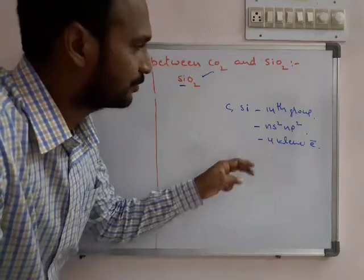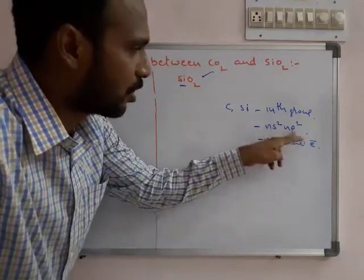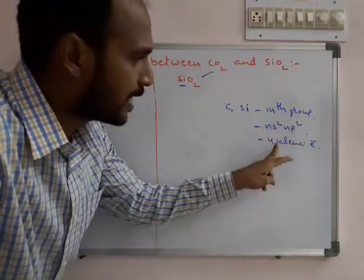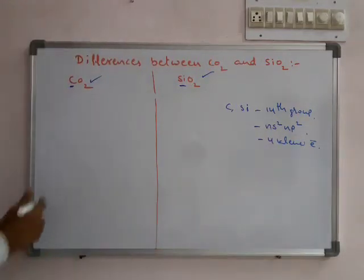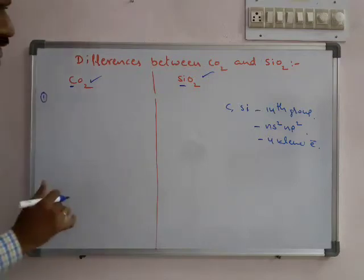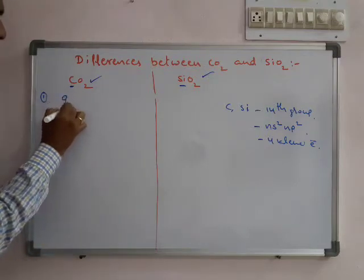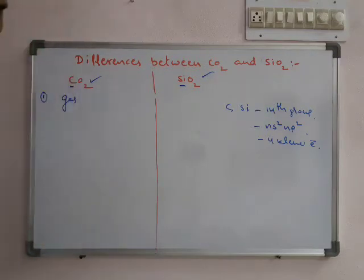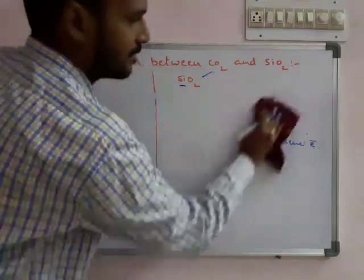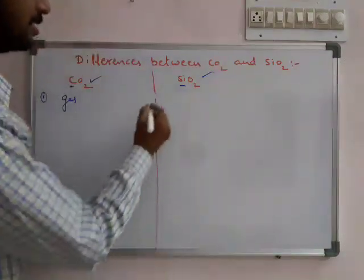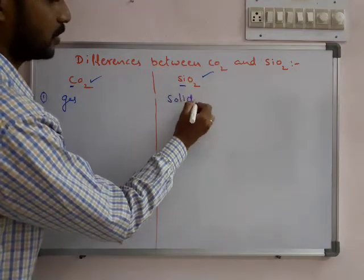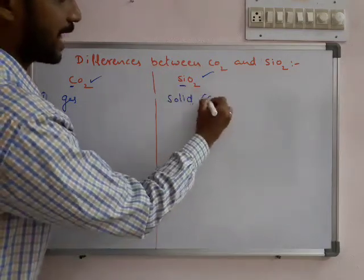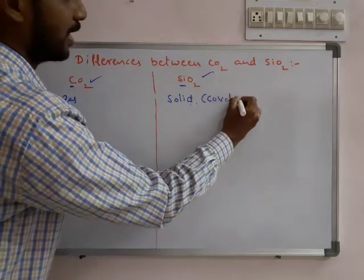Even though they belong to the same group in the periodic table with the same valency configuration and same number of valency electrons, they are showing different properties. Why? The main difference is CO2 is generally present in gaseous form, whereas SiO2 is present in solid form. It is a perfect covalent crystalline solid.